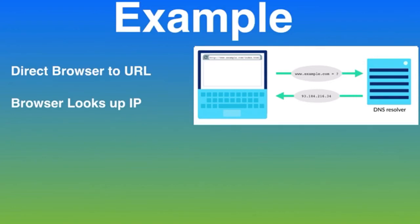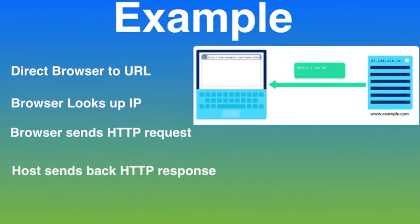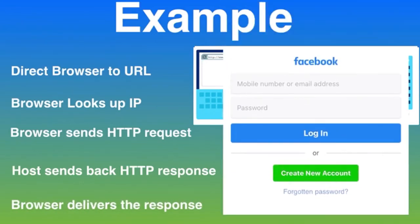In the third step, the web browser connects to the web server and sends an HTTP request for the desired web page, like facebook.com. In the fourth step, the web server receives the request and checks for the desired page. If the page exists, the web server sends it back. If the server cannot find the requested page, it will send an HTTP 404 error message. In the final step, the web browser receives the Facebook page from the web server and the connection gets closed.